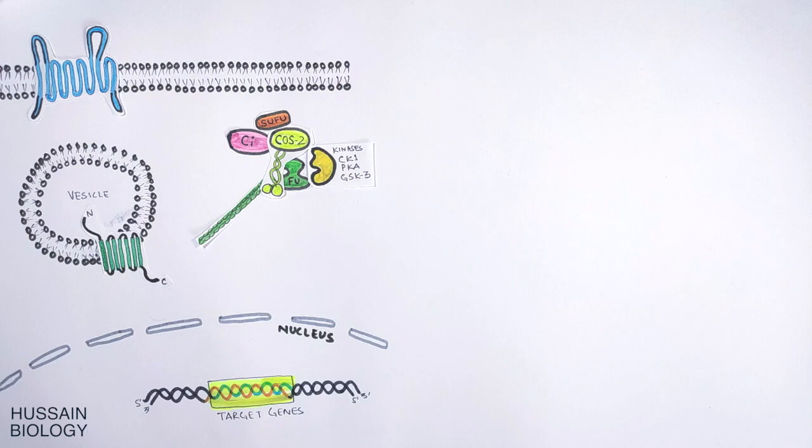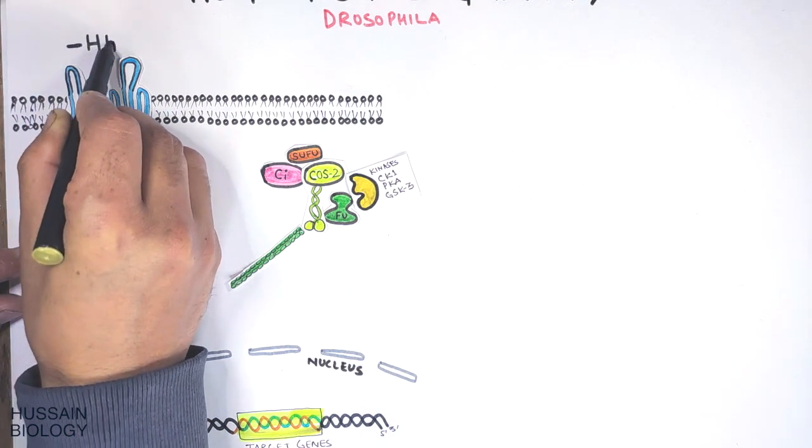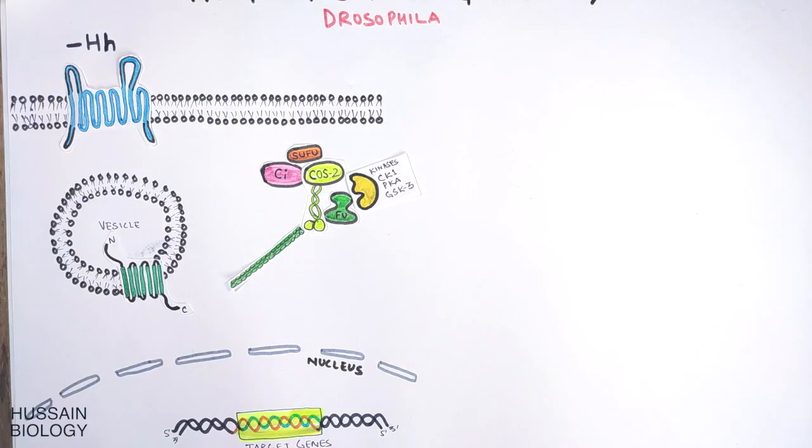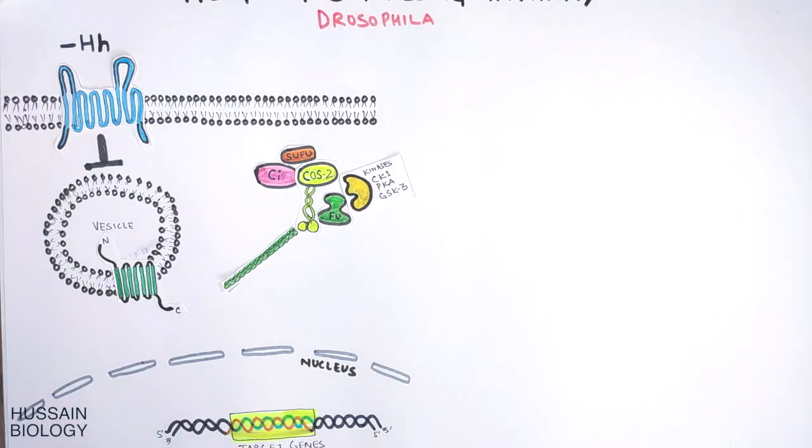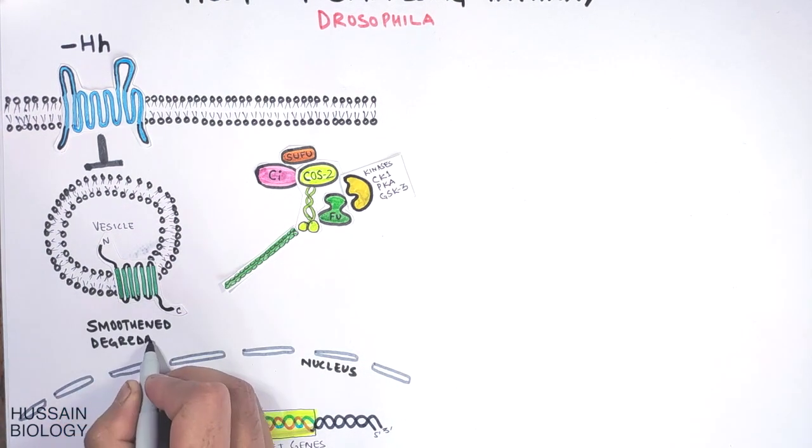Now when the hedgehog signal is not present due to mutation, meaning the hedgehog does not bind to the Patched receptor on the cell, the absence of hedgehog causes the Patched protein to send the inhibitory signal towards the vesicle where Smoothened protein Smo gets inhibited. The Smo protein is degraded in the absence of hedgehog signal.